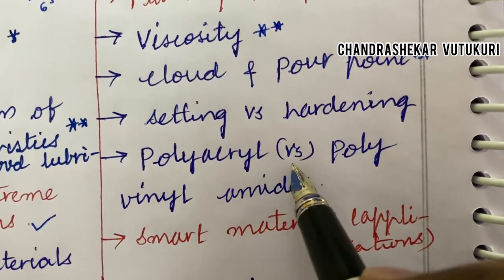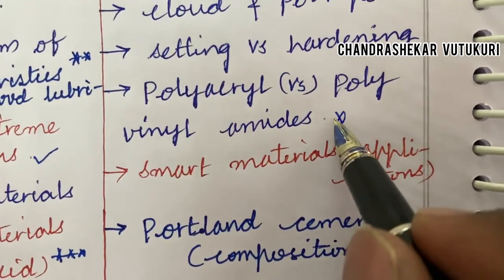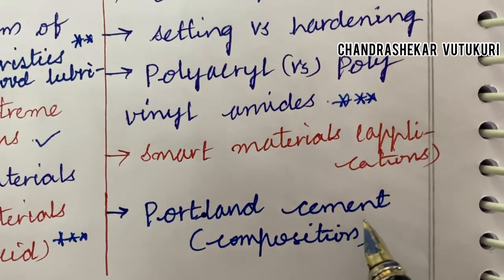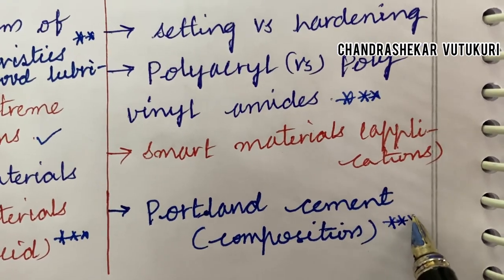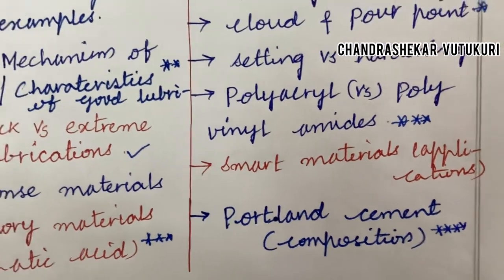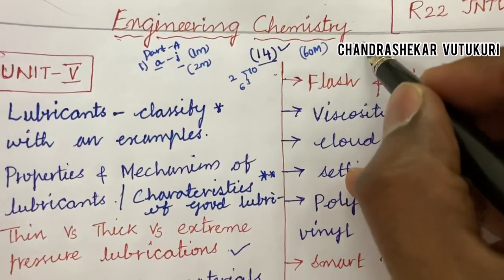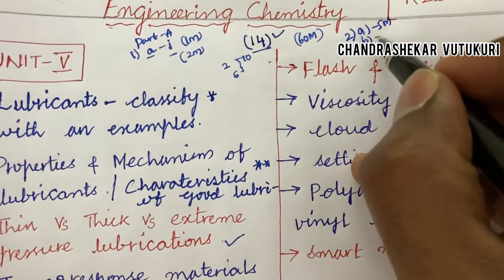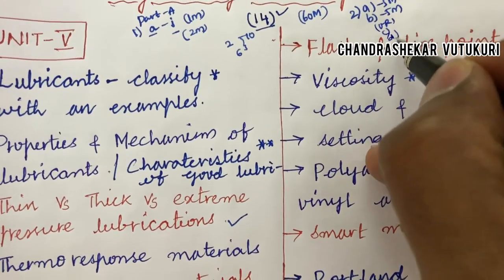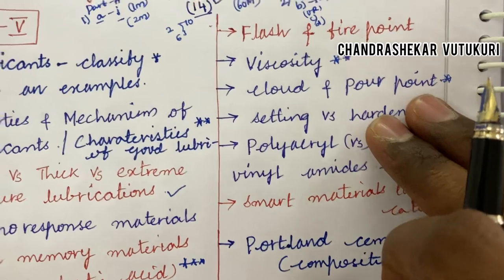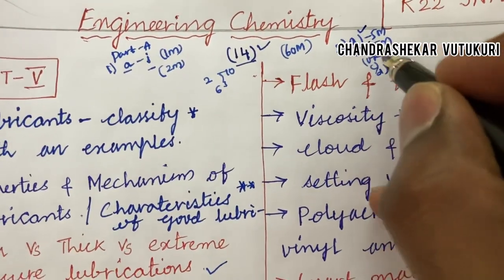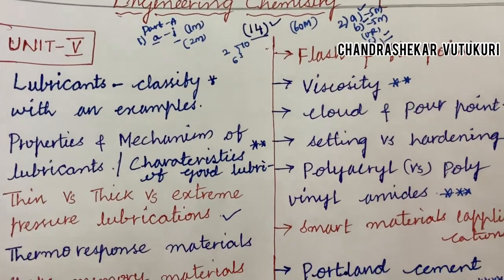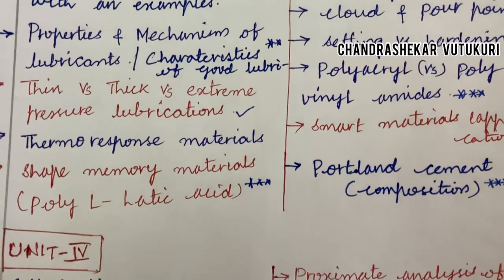Setting versus hardening and polyacrylic versus polyvinyl amides is said to be a short or long question this time for 5 marks. Smart material and its applications, and Portland cement along with its composition, is said to be a top question. Dear students, do not expect a direct 10-mark question — it means a combination of 5 and 5 split, or you may get A or B, or C or D combinations. I have done a video on the question paper pattern also — please go through it, it is uploaded in the channel and I am going to post that link in the comment section.